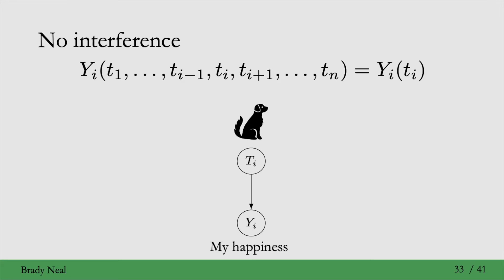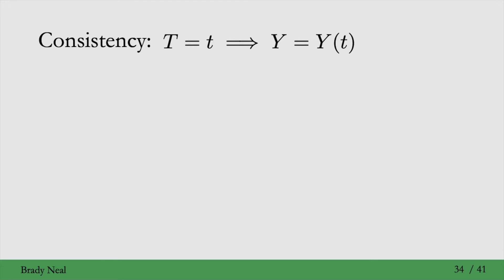With that, we can move on to the final important assumption, which is called consistency. Consistency is just that if the treatment, capital T, takes on a specific value, little t, this implies that the outcome that we observe is the potential outcome, Y(t).